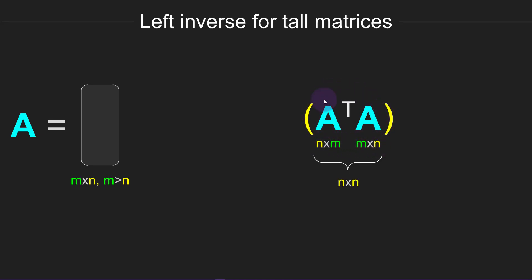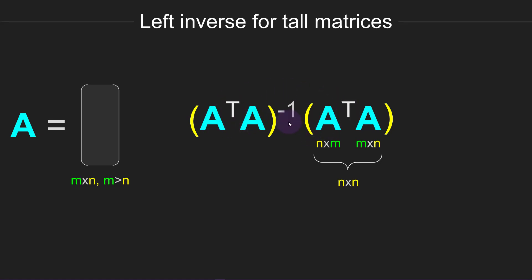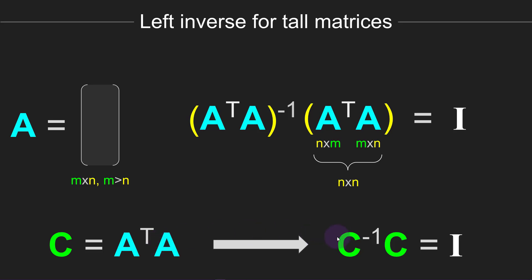If we think about A transpose A as being one matrix, then it is possible there could be a matrix (A transpose A) inverse such that the product of these two matrices produces the identity matrix. You have to be careful here — what I'm inverting is the matrix product of A transpose times A. It's not valid to apply the inverse to each matrix individually because neither A transpose nor A is on its own invertible. You can set C equal to A transpose A, and then C inverse times C equals the identity matrix.